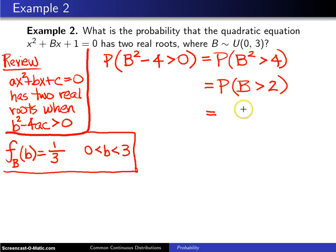Well, you integrate the pdf of b, which is one-third, from 2 up to its upper limit, which is 3.